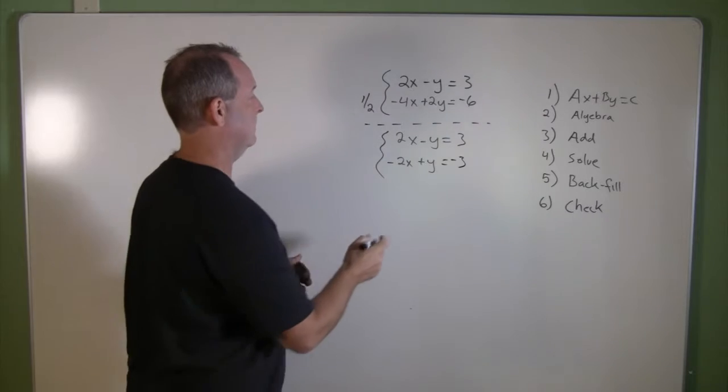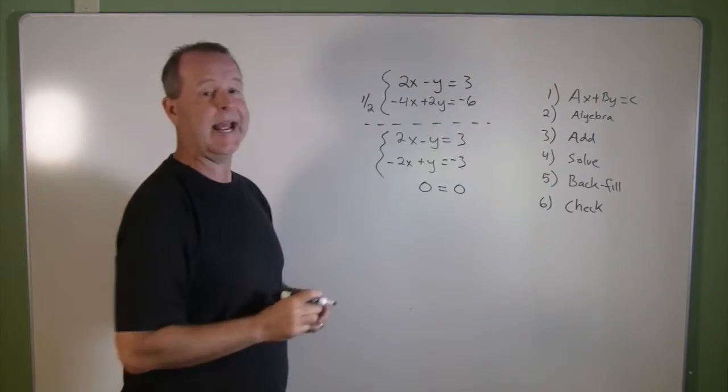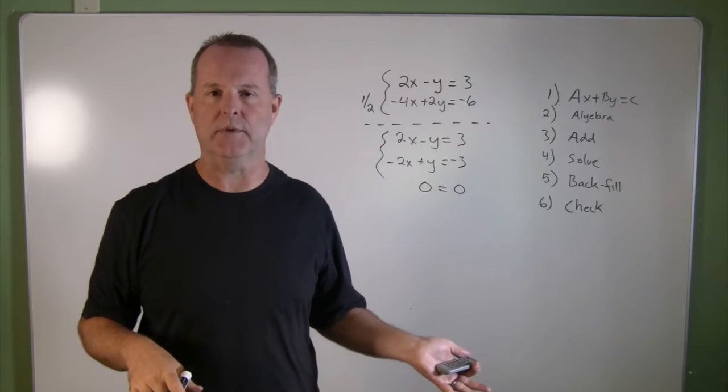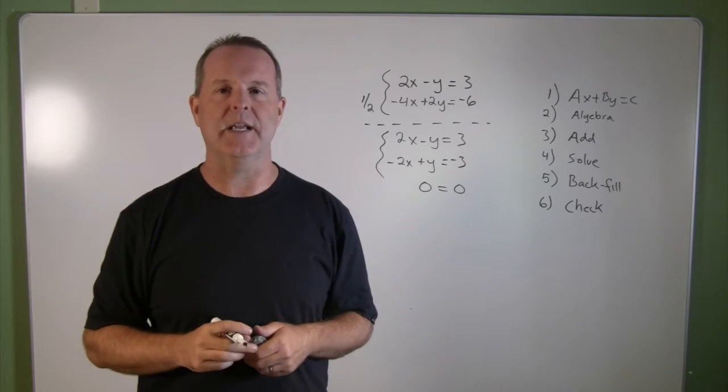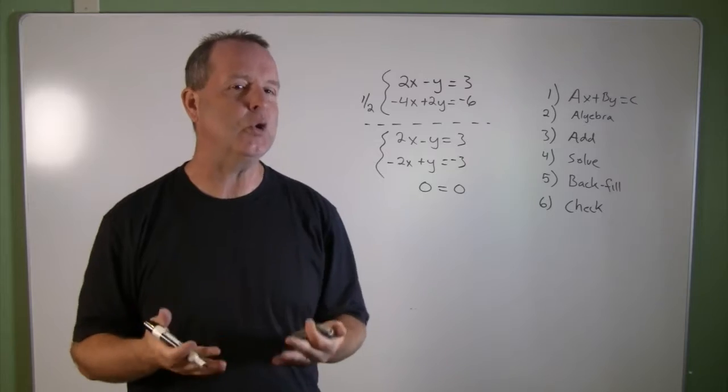My terms drop out. They drop out on both sides. And I get some type of a true statement. This time it says zero equals zero. Other times I can get six equals six or twenty-four equals twenty-four. But the point is I got a true statement.